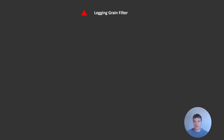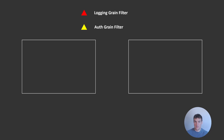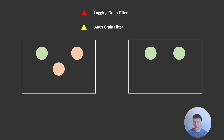Let's say in our example we have a login grain filter and an auth grain filter. The login grain filter is represented by the red triangle, while the auth grain filter is represented by the yellow triangle. We also have two silos — one silo has a number of different grains on it, a green and two oranges, while the other just has two green grains. We decide to add a grain filter to our green grains; Orleans supports targeting a filter to just one grain type. But we can also say we want every grain on a silo to use a given grain filter.